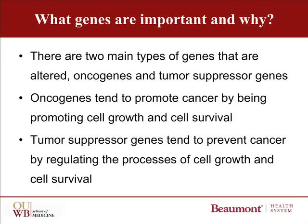In pancreatic cancer, there are two main types of genes that are often altered. These include genes that produce proteins that increase cell growth, prevent cell death, and promote cell survival — these are called oncogenes — and genes that normally control the same processes or turn them off, called tumor suppressor genes.